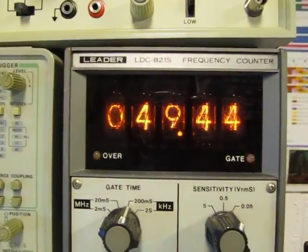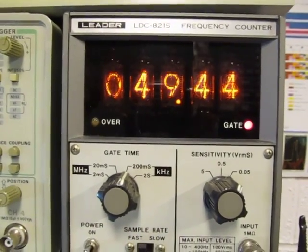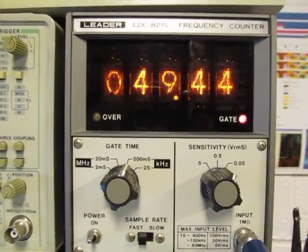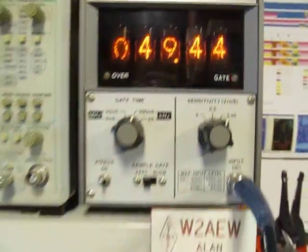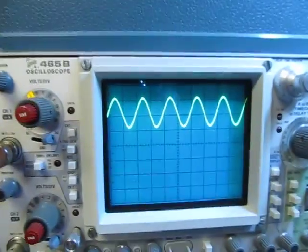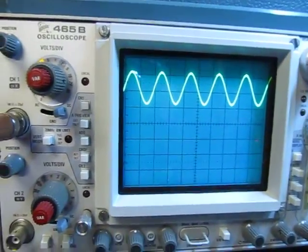One of the things we can do with that is drive something like a frequency counter. So I can see I've got about a 50 kHz, 49.4 kHz signal coming out of my signal generator. So a really easy way to measure that frequency.